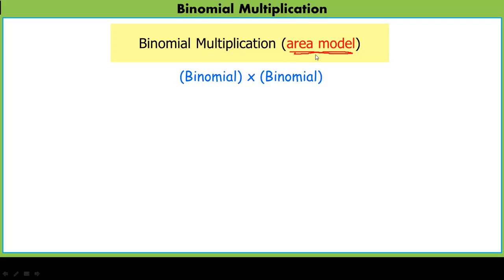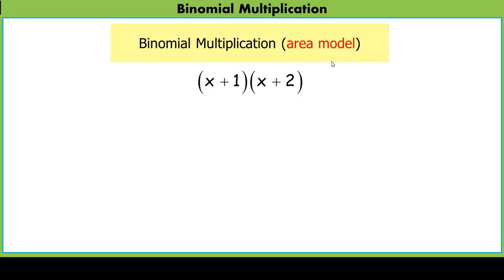When we talk about binomial multiplication, we're talking about a binomial times a binomial — something like x plus 1 times the quantity x plus 2. We're going to use the area model, and it's a very powerful model.